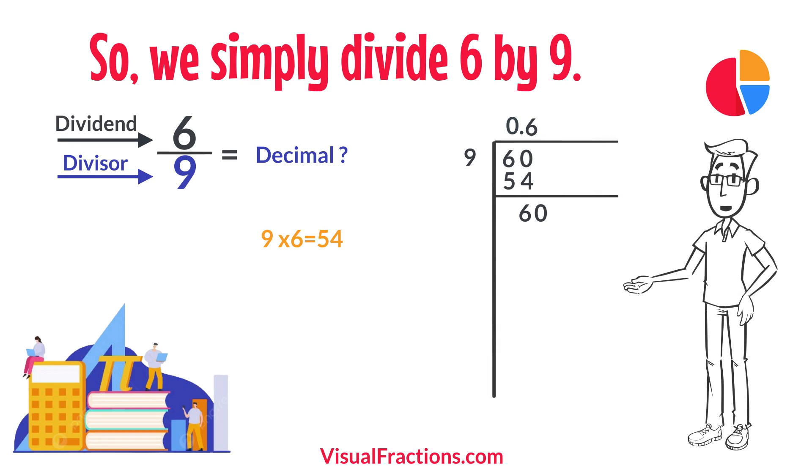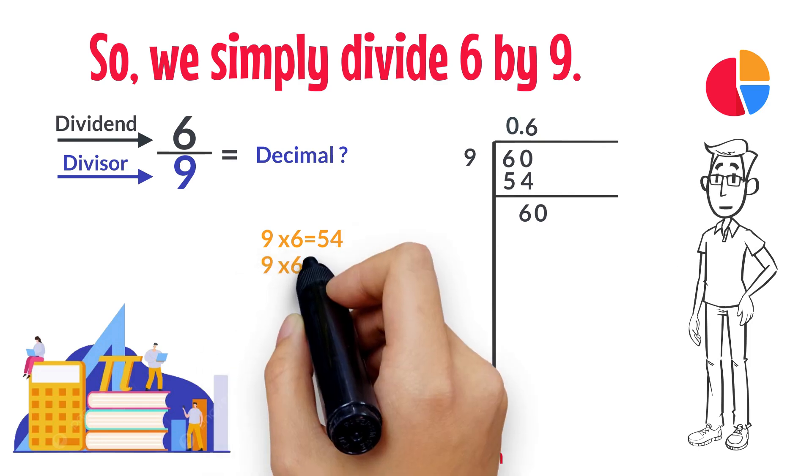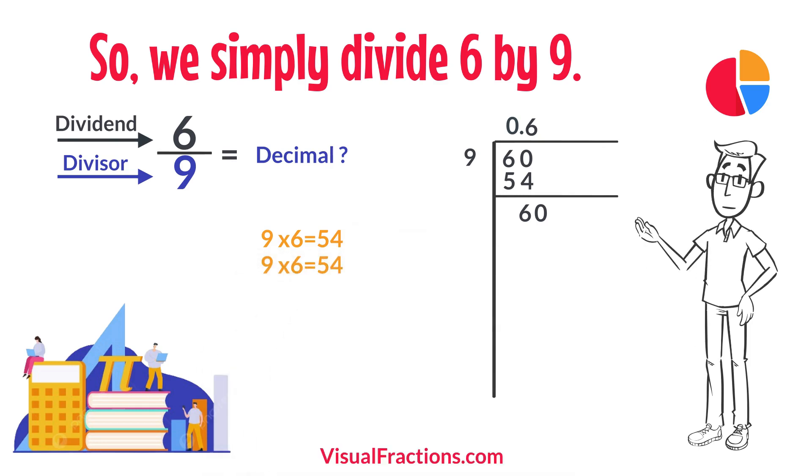How many times does 9 go into 60? Once more, it goes in 6 times. We add another 6 to our quotient, giving us 0.66.